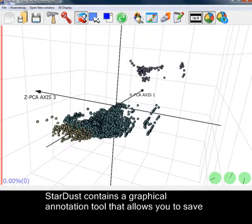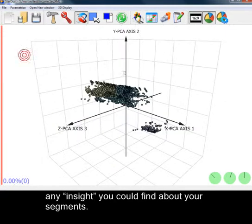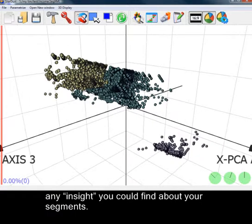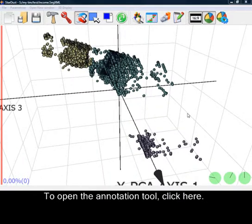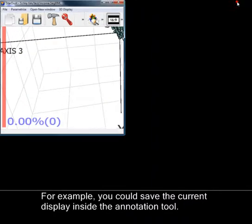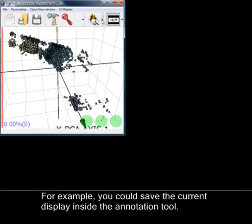Stardust contains the graphical annotation tool that allows you to save any insight you could find about your segments. To open the annotation tool, click here. For example, you could save the current display inside the annotation tool.